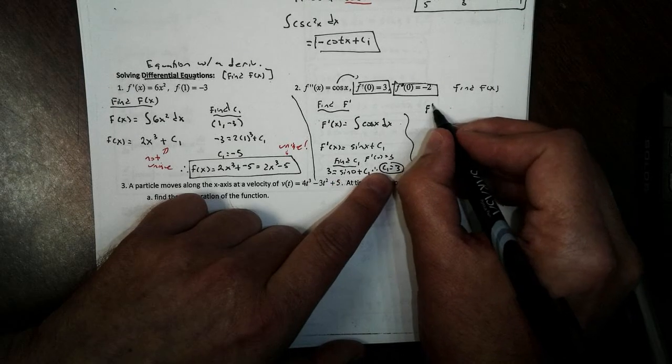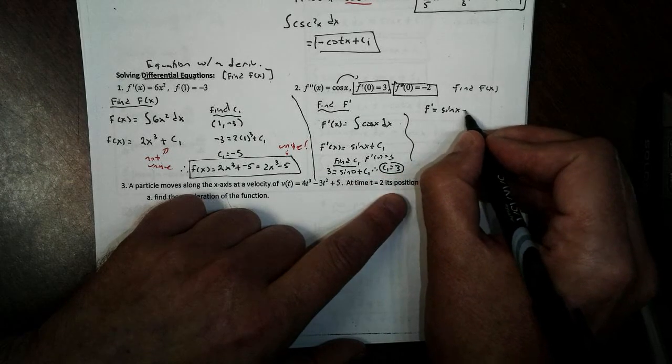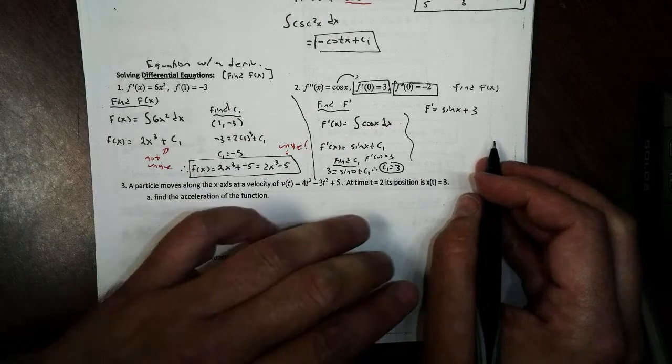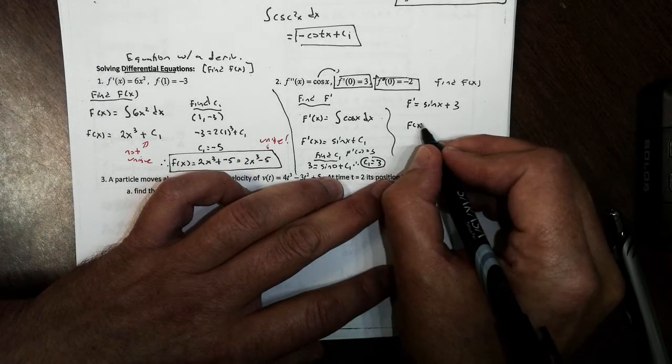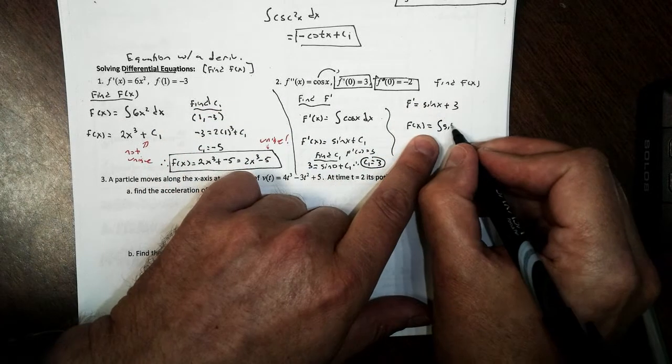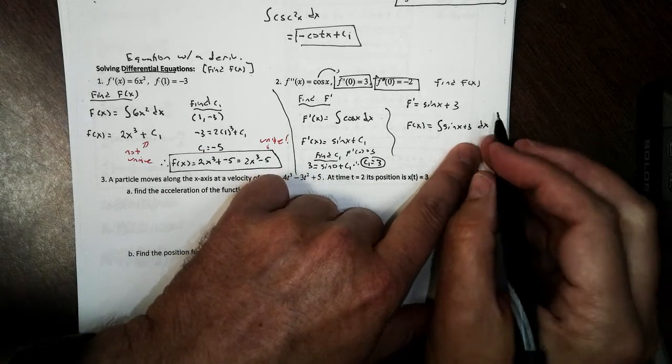So we have our derivative being sine of x plus 3. Now, we're not done because now we want to find f of x. To get f of x, we're going to integrate our derivative, sine of x plus 3. Again, don't forget the dx. They're not going to tell you to put it there. You have to remember.